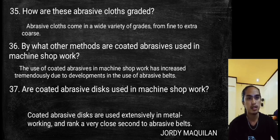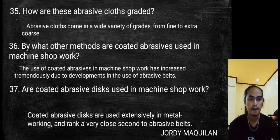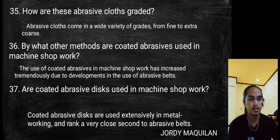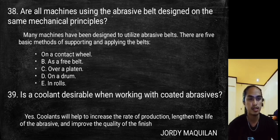Abrasive cloths come in a wide variety of grades from fine to extra coarse. The use of coated abrasives in machine shop work has increased tremendously due to developments in the use of abrasive belts. Coated abrasive discs are also used extensively in metal working, ranking a close second to abrasive belts. Many machines have been designed to utilize abrasive belts using five basic methods of supporting and applying the belts.